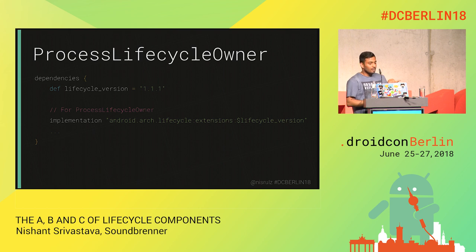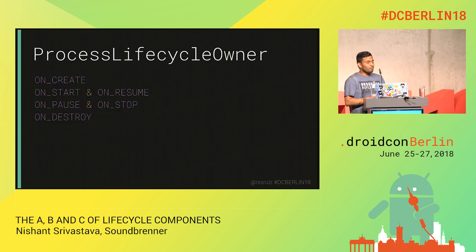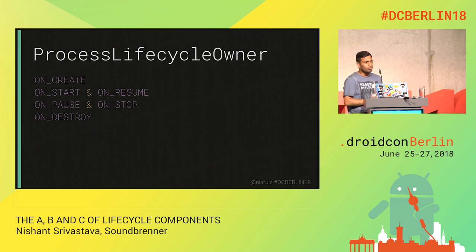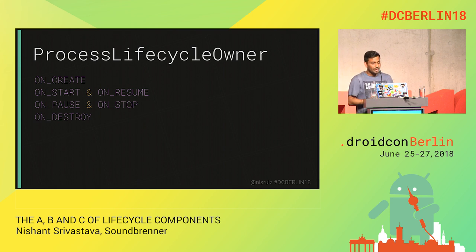To add this, you include the lifecycle-extensions dependency. Let's see how ProcessLifecycleOwner actually tracks the lifecycle. The common things we'd expect are onCreate, onStart, onResume, onPause, onStop, and onDestroy, but it works differently. The first difference is that onCreate is called only once, when the first activity starts up. Then onStart and onResume are called, indicating that the first activity has started and is in those states.